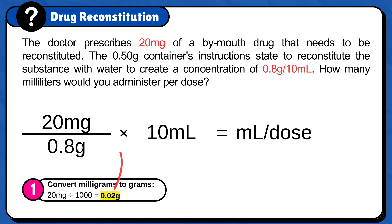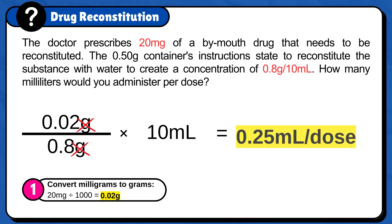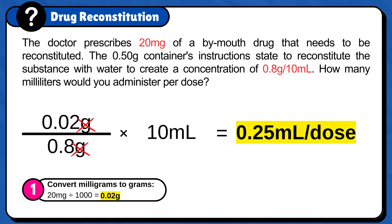Now plug this answer into the formula and calculate it: 0.02 gram divided by 0.8 gram times 10 milliliters. Grams cancel out and the answer is 0.25 milliliters per dose. So you will administer 0.25 milliliters per dose.